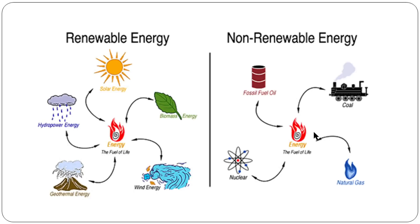Coming to the third point, the sun is the ultimate source of wind energy. The sun produces heat unevenly in different places. The air in warmer areas heats up and rises, and cold air moves in to replace it. This movement of air — warm air rising and cold air moving — produces wind energy, which can be used to generate electricity.